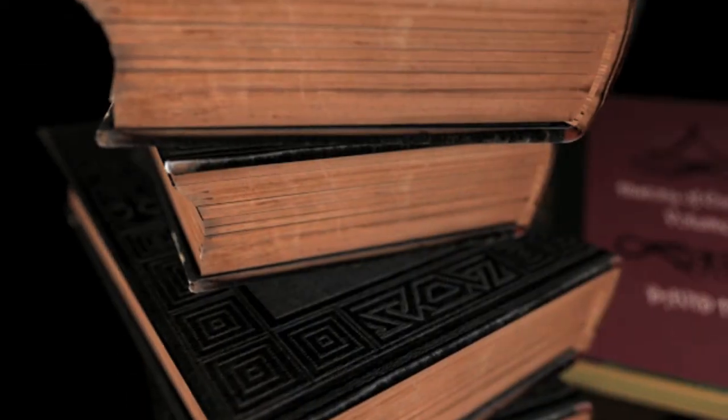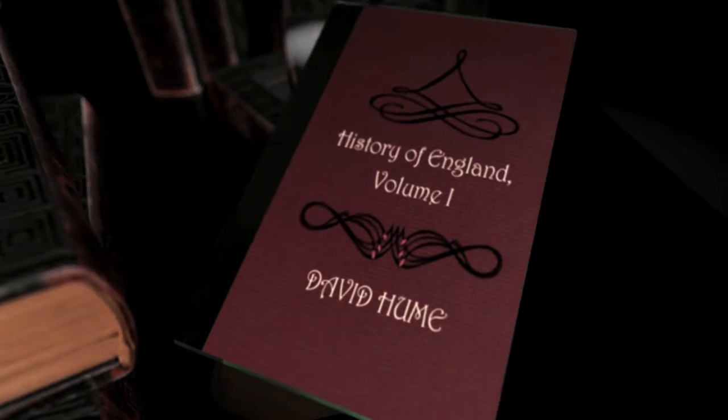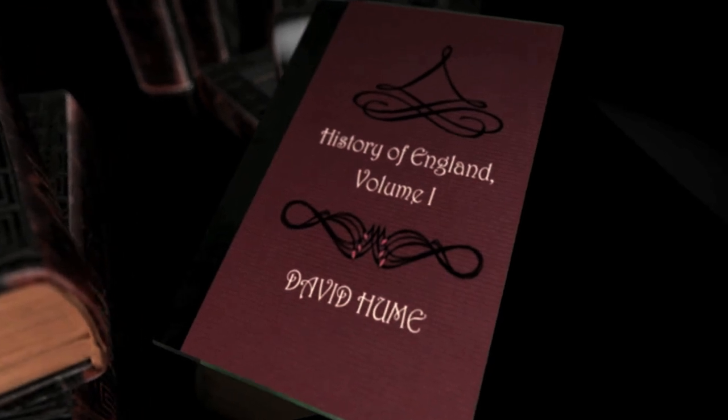Moreover, Hume was constantly being badgered by his contemporaries to finish his great history of England. Hume's response when they kept pressing him for a publication date was quite simple. Look, says Hume, I'm too lazy, too fat, and just too rich to write this anymore.